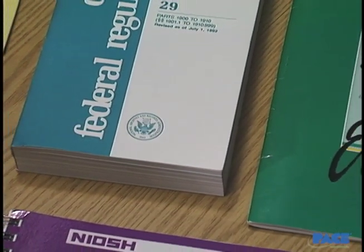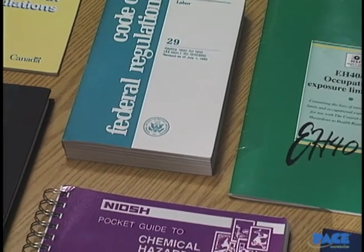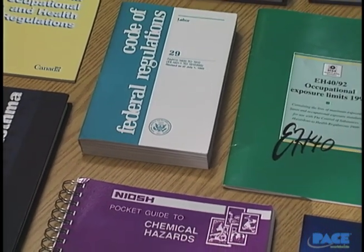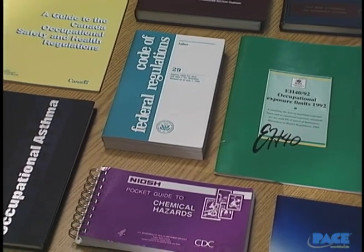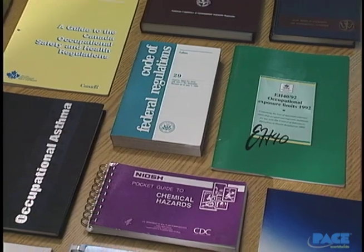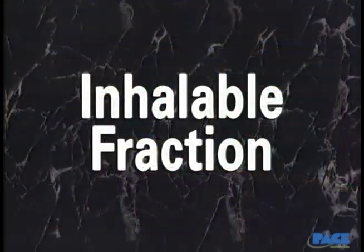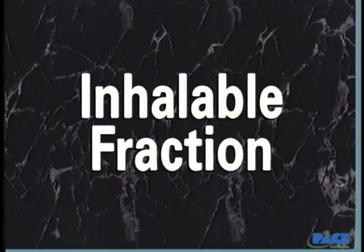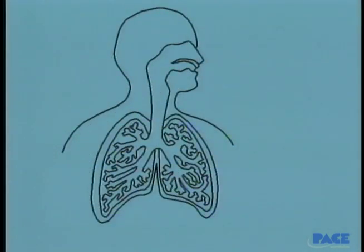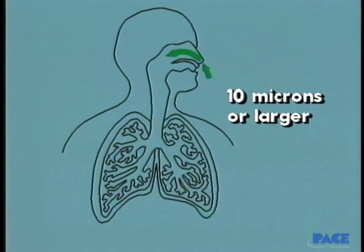International organizations which regulate exposure standards for workers' safety and health classify particles into three categories of risk. The inhalable fraction includes particles which are 10 microns or larger in diameter. These particles are normally captured in the nose and mouth. Pollens are a common inhalable-sized particulate.